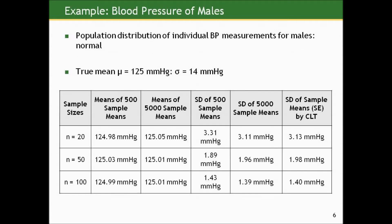Here I'm displaying the results of the simulations using 500 sample means and 5,000 sample means. You can see that the means across all sample size studies — 20, 50, and 100 — are all around 125 millimeters of mercury, the true population mean. And you can see that the sample standard deviation of the 500 sample means based on samples of size 20 is similar to that of the 5,000 sample means, which are both similar to what they should be by the central limit theorem.